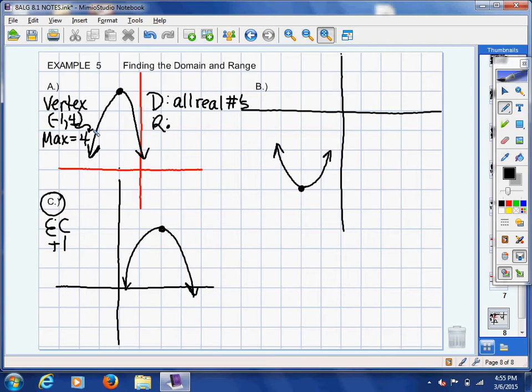Now maximum indicates that is the highest y-value on your graph. You can't go any higher than 4. Your graph stops at y equals 4. So your range has everything to do with the y-values.